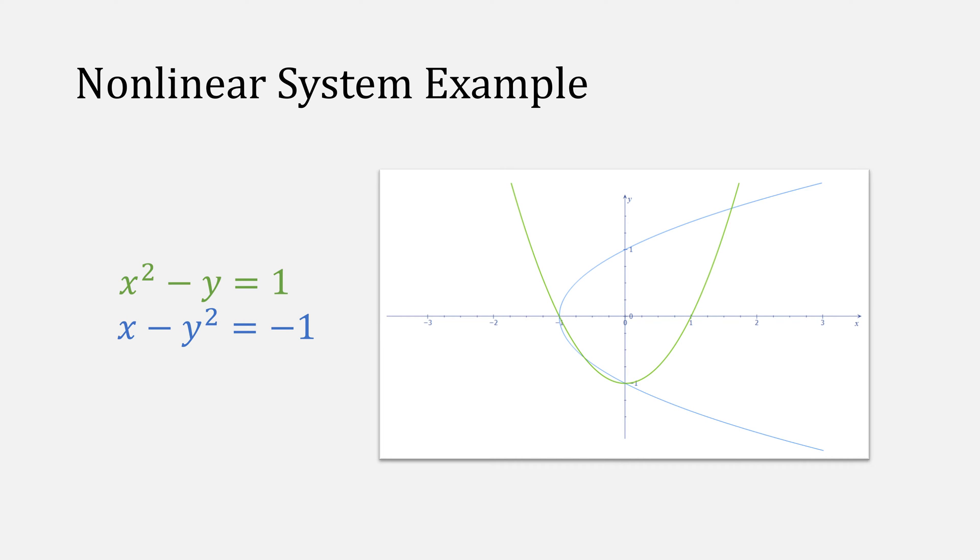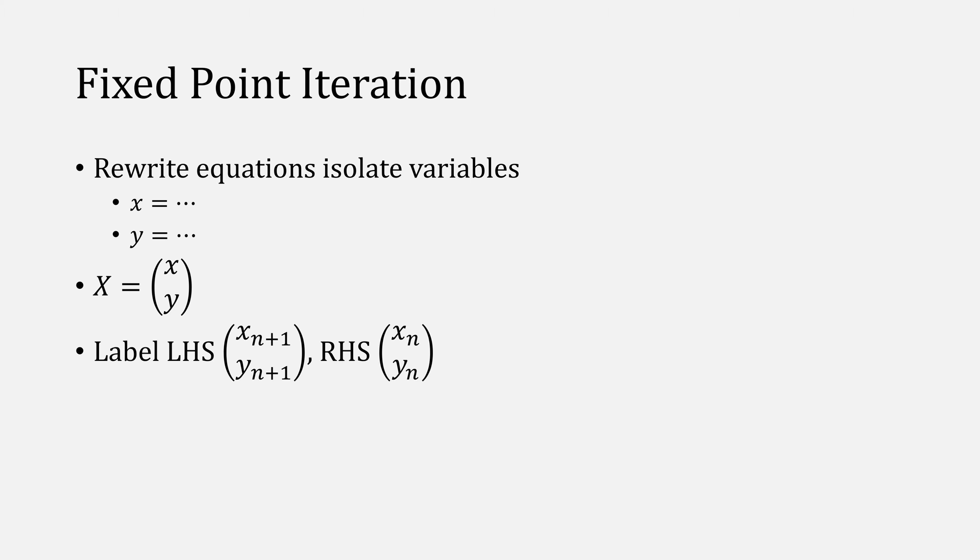As the basis for this video, we'll use the nonlinear system of x squared minus y equals 1, and x minus y squared equals negative 1, which has these four solutions. So how does fixed-point iteration work? First, rewrite your equation so that you can isolate your variables, for example x is equal to something and y is equal to something. You can also represent it using a vector, for example capital X is xy. Then we label the left-hand side with n plus 1 and the right-hand side with n. Then pick a starting value for x and iterate until you find a solution.